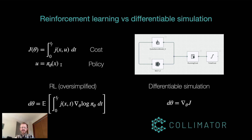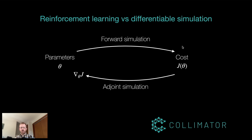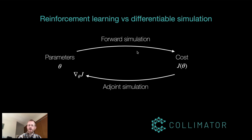Most simulation tools aren't differentiable and can't do this. If you're familiar with neural network training, you know about the backpropagation algorithm, which efficiently computes gradients of all neural network parameters given a scalar output function. The differentiable simulation works the same way — you run a forward pass (the normal simulation forward in time), then go backwards in what's called an adjoint simulation. Combined, these compute the gradients efficiently. In Collimator, this simulation can include fully hybrid dynamics — periodic discrete updates, state machines, guard reset maps, triggered by collisions — and it's fully differentiable.